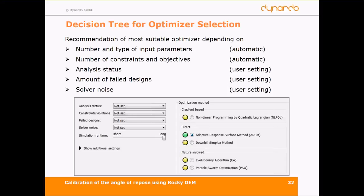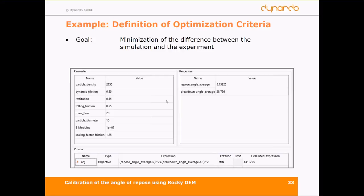For this optimization task, we have a wizard with a decision tree. You can set how good the analysis status is — how well you think the optimization is already achieved. This is a user setting which helps recommend the best optimizer. We define the optimization criteria: the repose angle minus the measurement value squared, summed with the drawdown angle minus measurement squared. We have only one objective, and the goal is to minimize the difference between simulation and experiment.